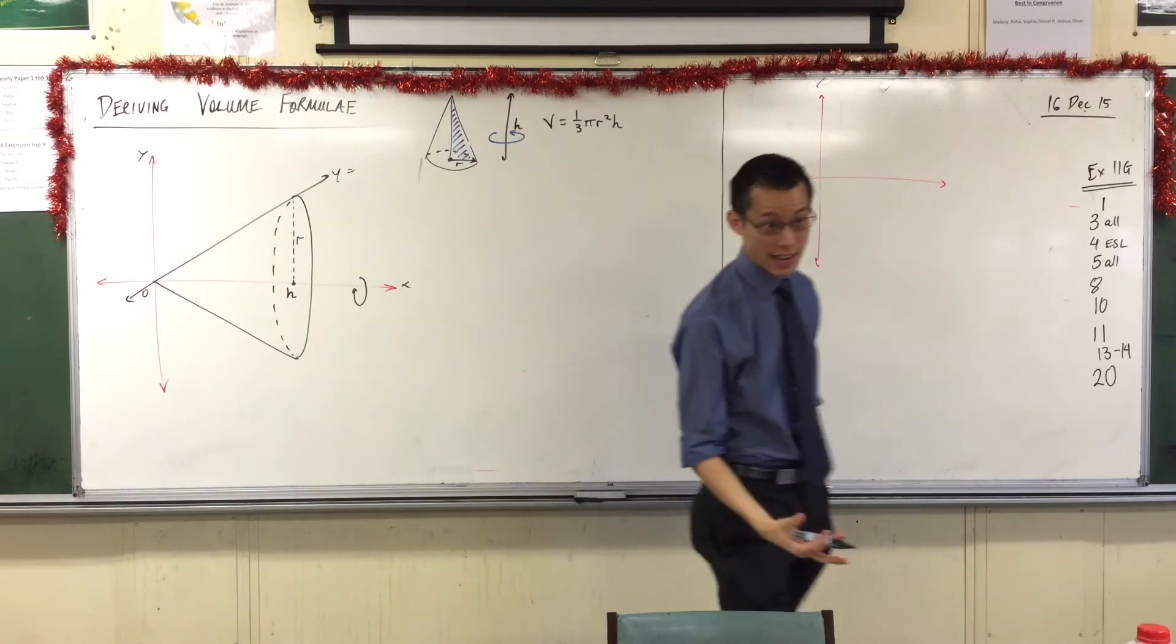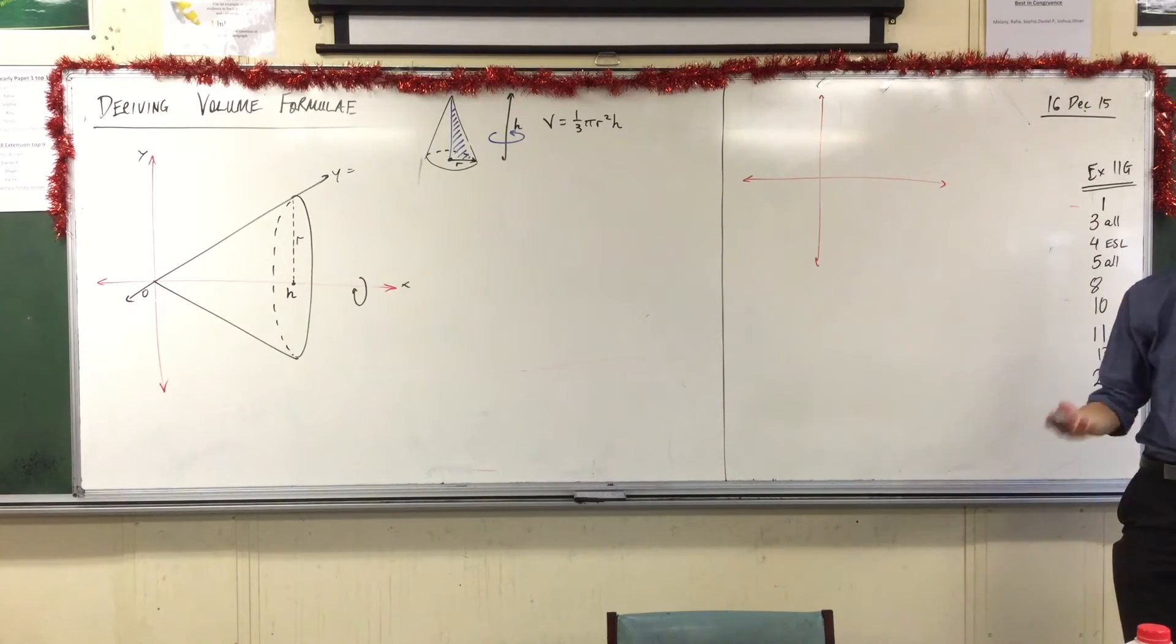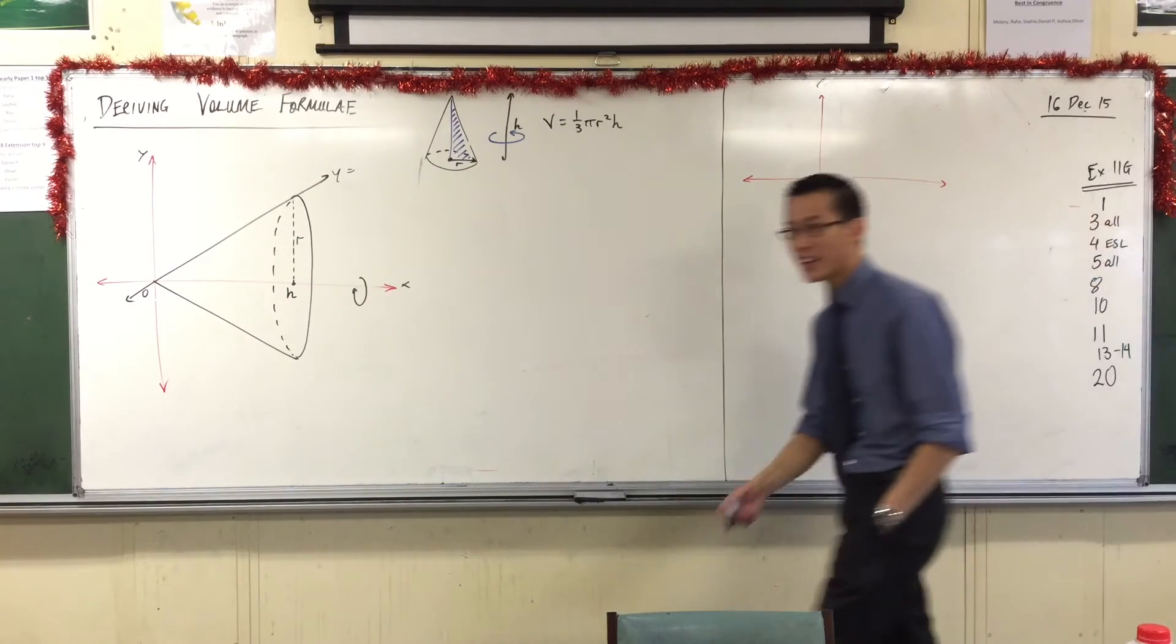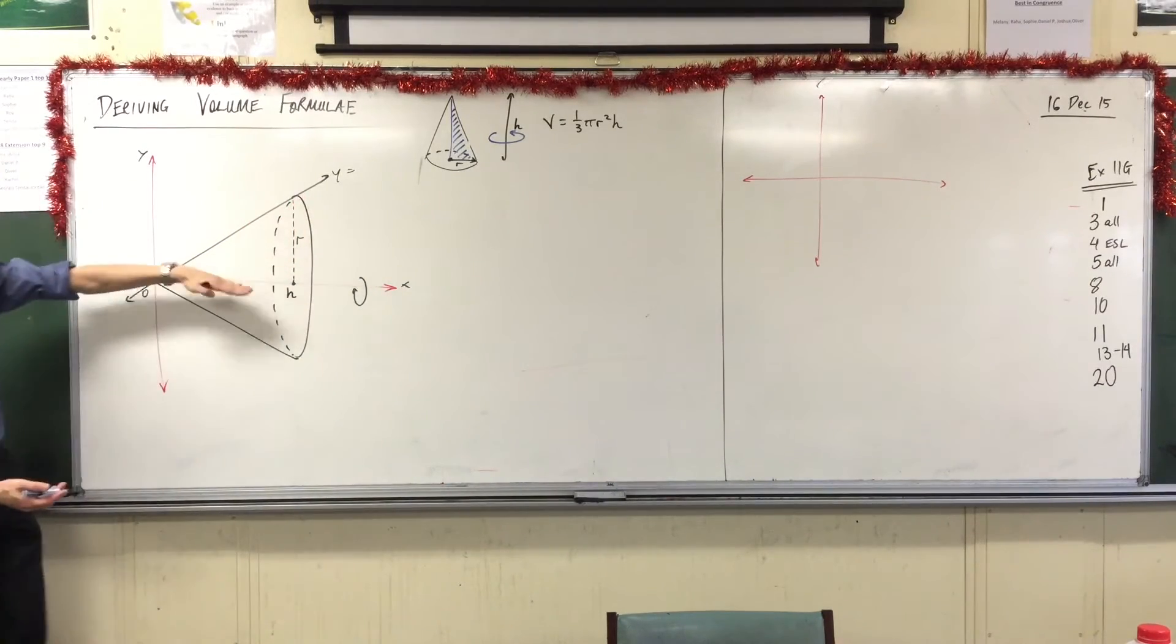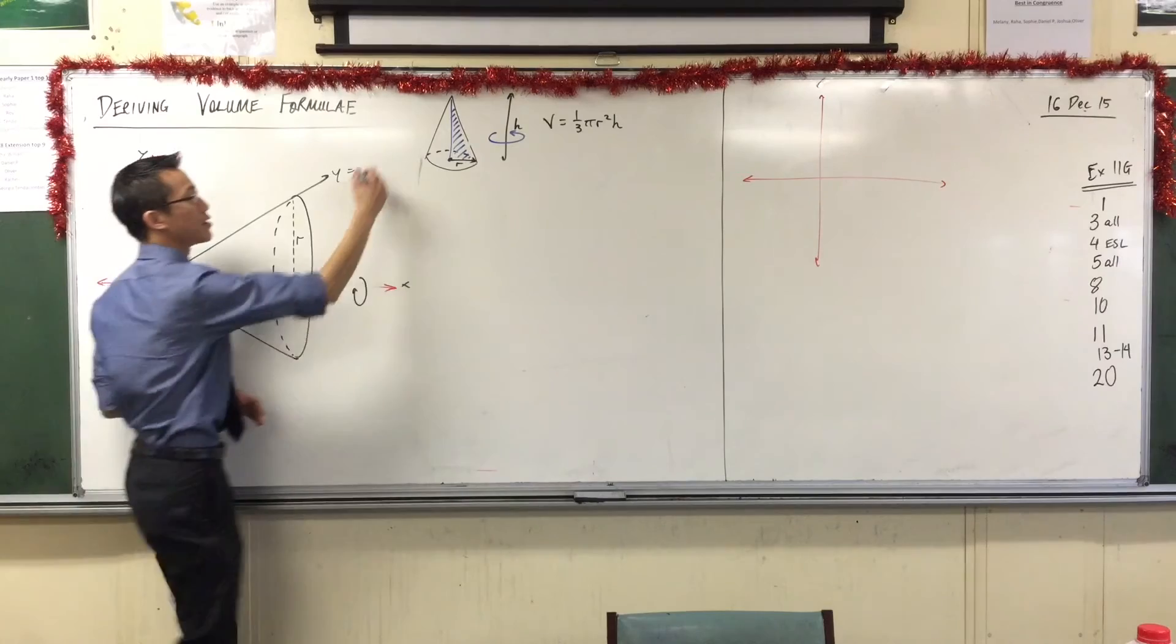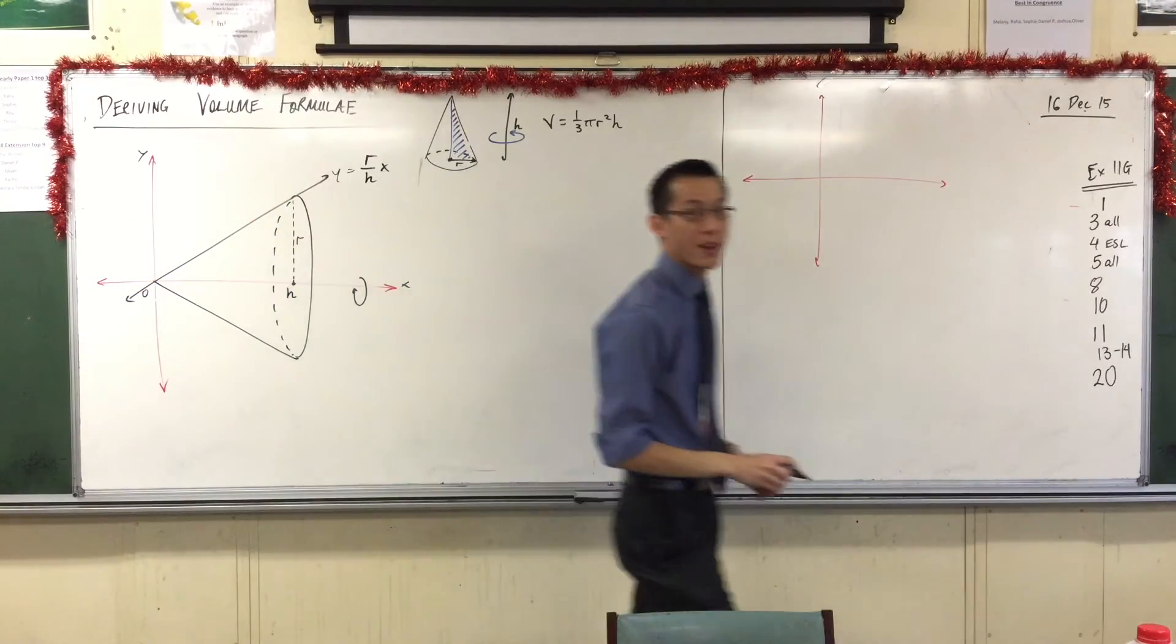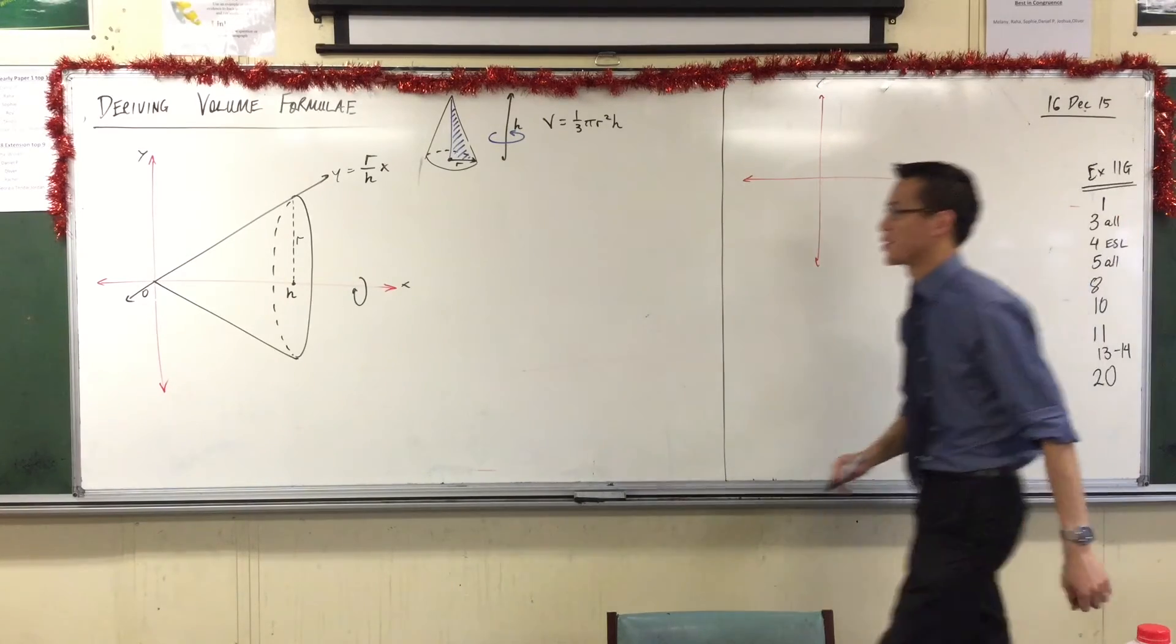It's a straight line, it passes through the origin, so that means it's in the form y equals mx, where m is the gradient of the line. What is the gradient of this line? R on h? Yeah, very good. Gradient is rise over run. And I have the whole rise here, and I have the whole run there. R on h. That's rise over run. So there is my gradient, which gives me the equation of my straight line. That's all the pieces I need. Just watch this.